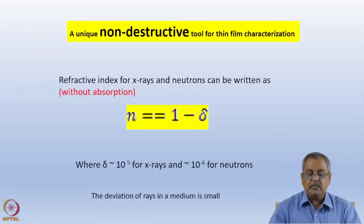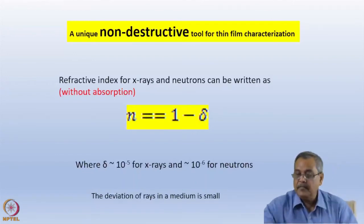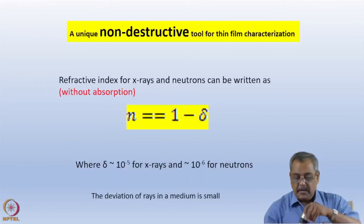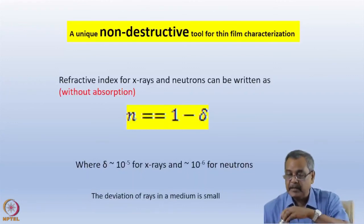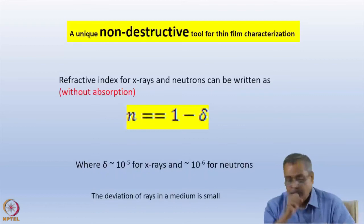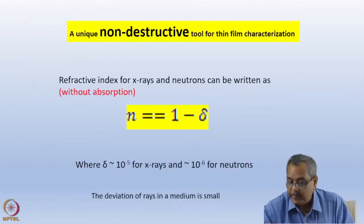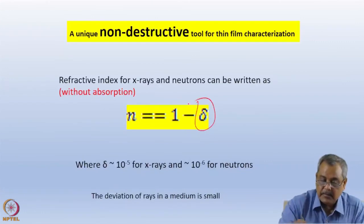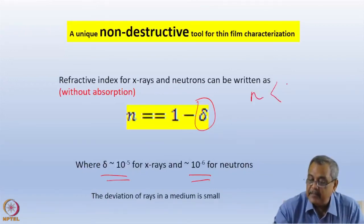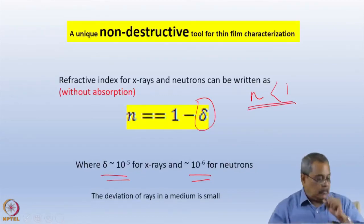X-rays and neutrons give us non-destructive tools for thin-film characterization as reflectometry. The refractive index for X-rays and neutrons can be written as n = 1 − δ, where δ is very very small — of the order of 10⁻⁵. So n is marginally less than 1 for neutrons and X-rays.